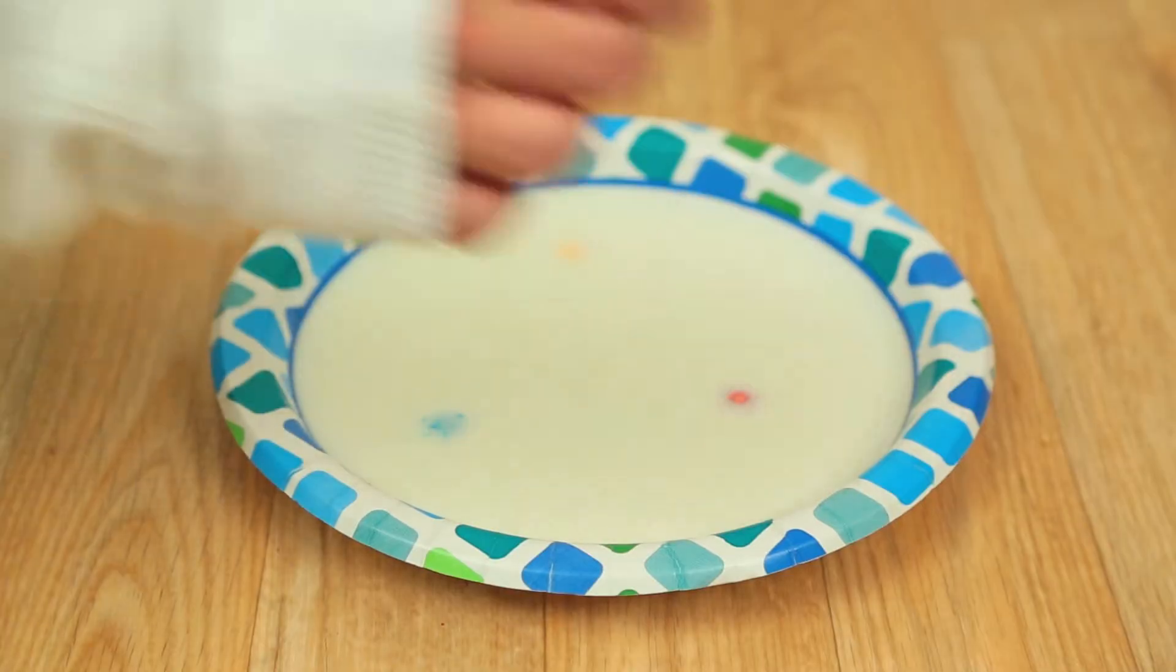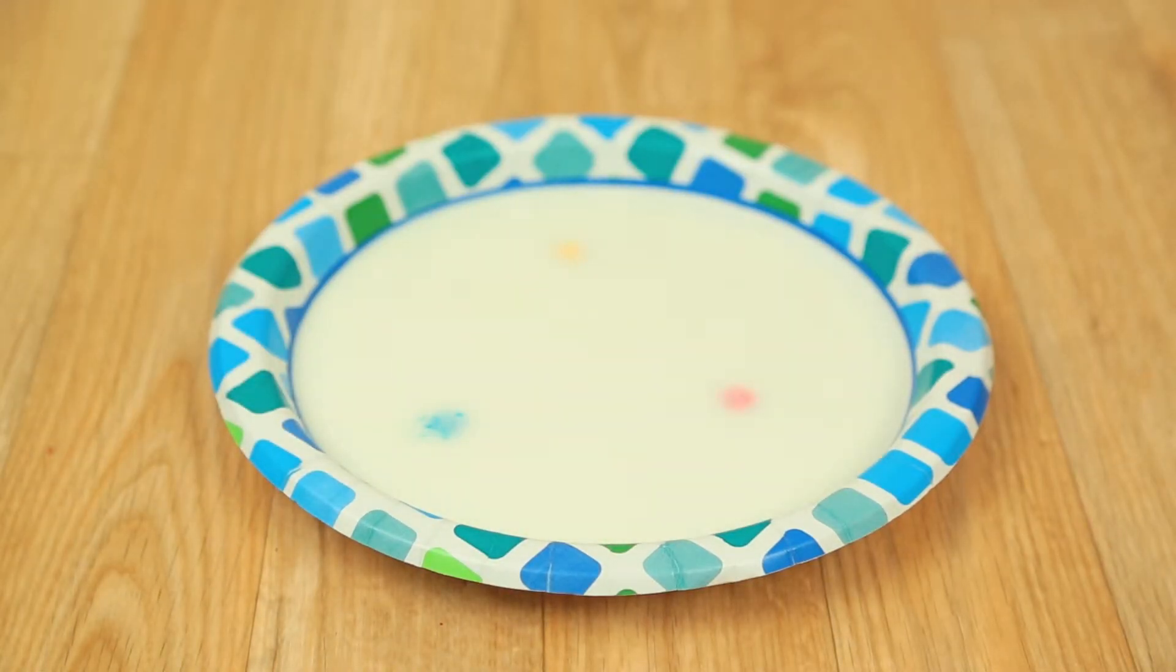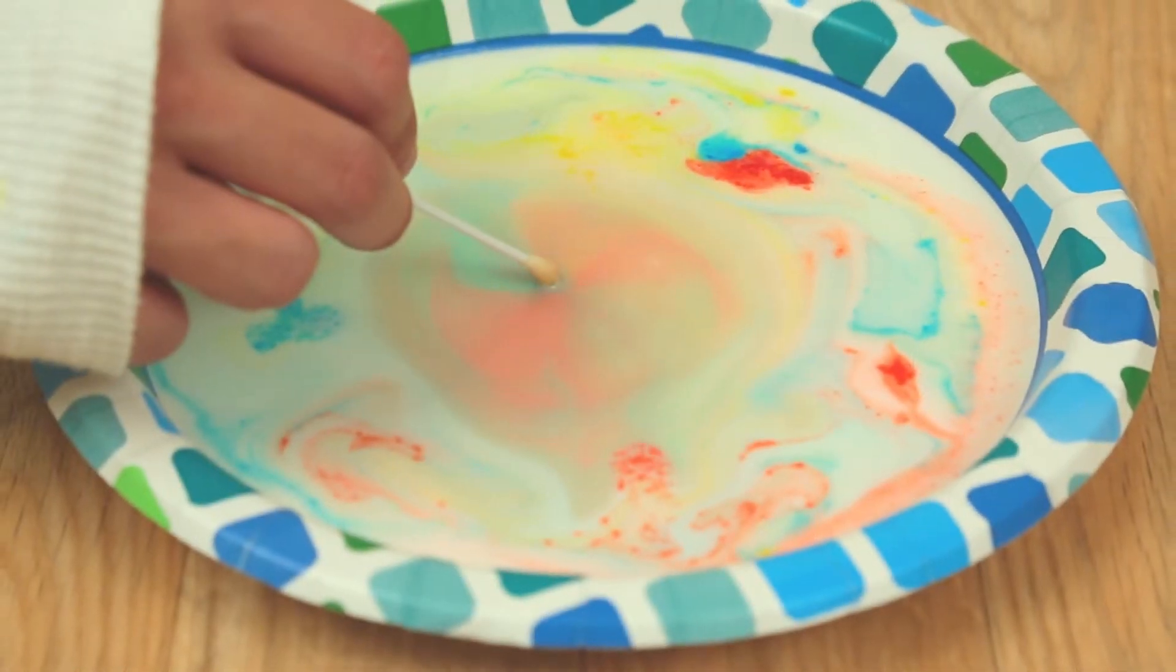Create your own rainbow using the tablets provided. Just drop them into a puddle of milky water and watch as a dab of soap creates exciting and colorful patterns.